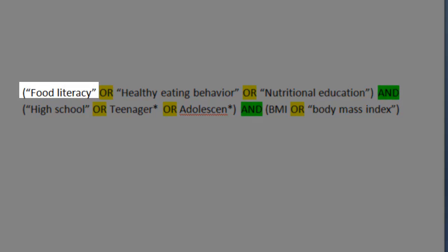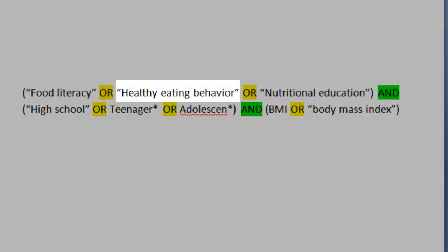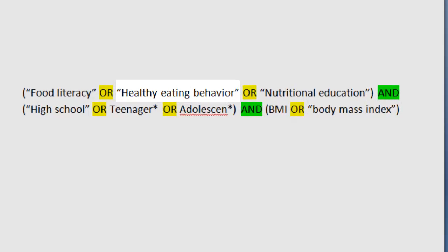We've also added the asterisk symbol to words such as adolescence, so the database will pick up adolescent or adolescence. Same with teenager or teenagers.